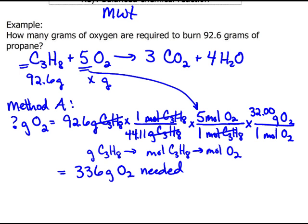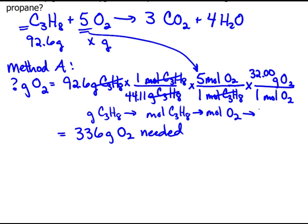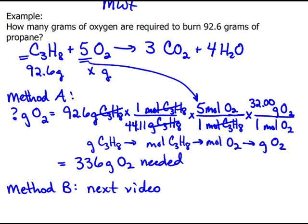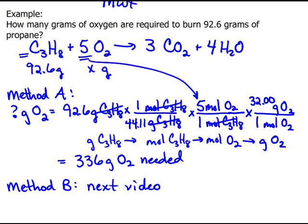Let's look at another method. What did we do? We went from grams of C3H8, to moles of C3H8, to moles of O2, to grams of O2. Method B, we're going to need to put in our next video. So let's spend just a few seconds to look at this. We changed our grams into moles as our first step, using molecular weight. So the first step is to get to moles.